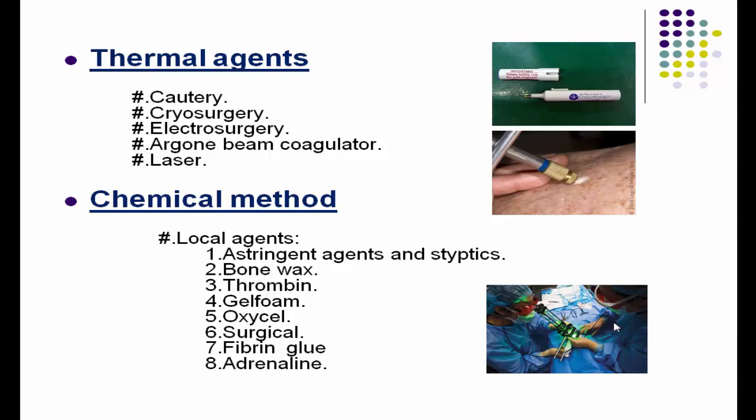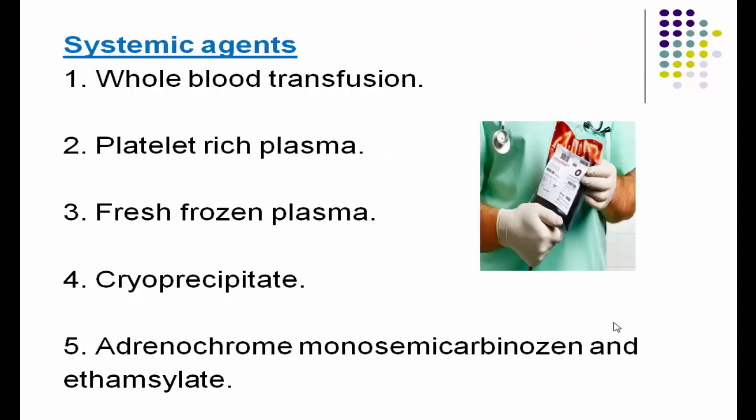Thermal hemostatic agents include electrocautery, cryosurgery, electrosurgery, argon beam coagulator, and laser. Chemical methods include local agents such as astringent agents, bone wax, thrombin, gel foam, Oxycel, Surgicel, fibrin glue, and adrenaline. Systemic agents include whole blood transfusion.